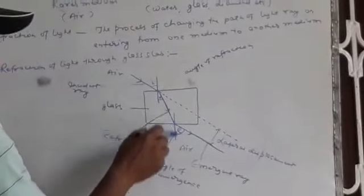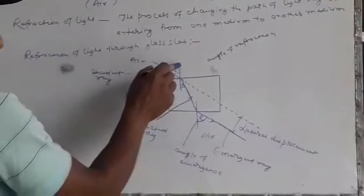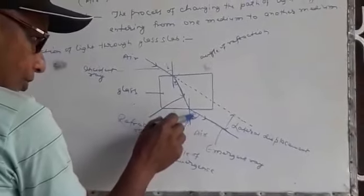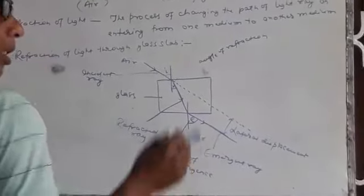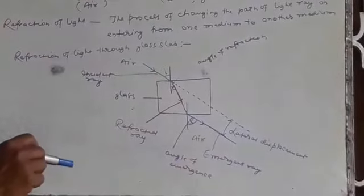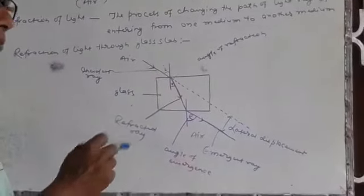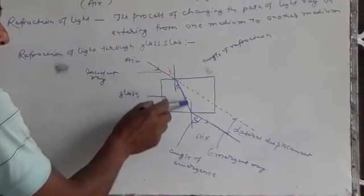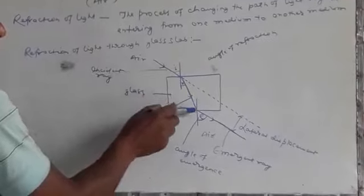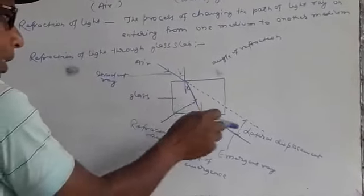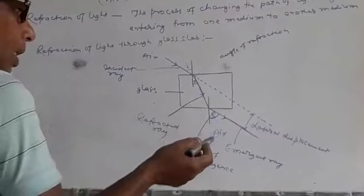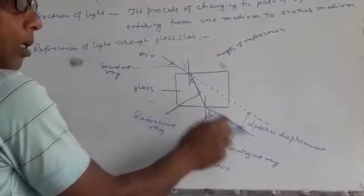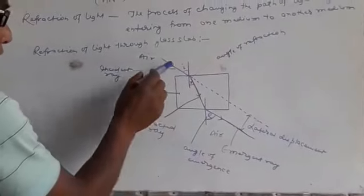Normal is a perpendicular line. There are two normals — first normal and second normal. When light ray goes from air to glass, simple answer: it bends toward the normal. When light ray goes from glass to air, simple answer: it bends away from the normal. This ray entering is called the incident ray.